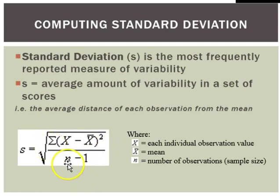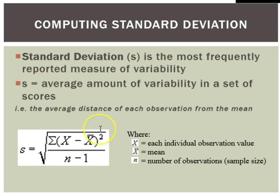We take that sum and divide it by our number of observations minus 1 — we'll understand why in a moment. The final step puts it back into the units of our original data, because since we squared the differences, taking a square root puts it back into the same units. This means we can literally interpret the standard deviation as: on average, our observations differ from the mean by this much.